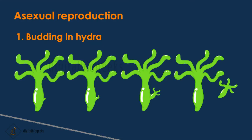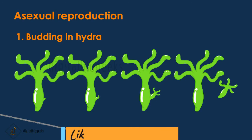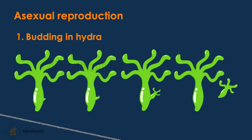Now that we understand sexual reproduction, let's move on to asexual reproduction in animals. Hydra is a multicellular organism. In this animal, small bulges are present, called buds. These buds are formed due to the repeated division of cells. The bud grows into a new Hydra and finally gets detached from the parent body. This type of asexual reproduction, where only a single parent is involved, is called budding.